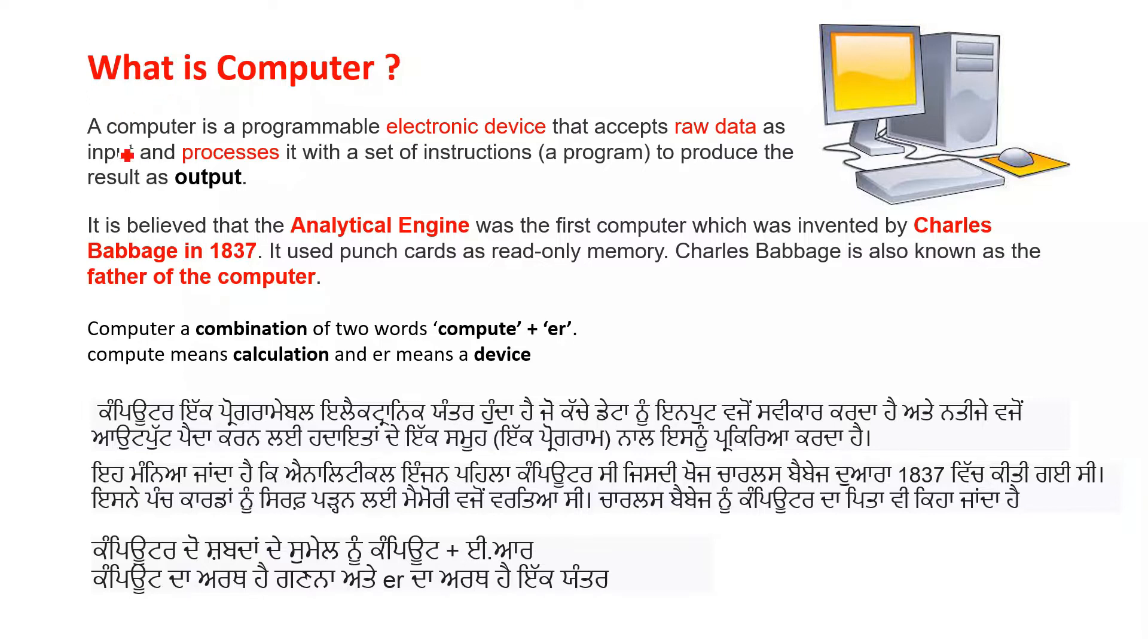What is computer? A computer is a programmable electronic device. This is an electronic device that accepts raw data as input, and processes it with a set of instructions, that is a program, to produce the result as output.